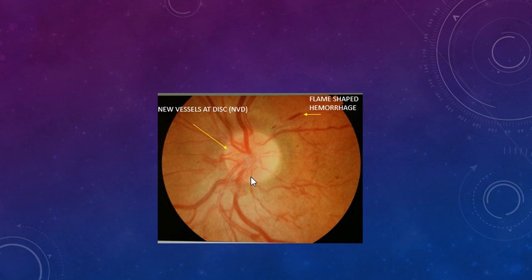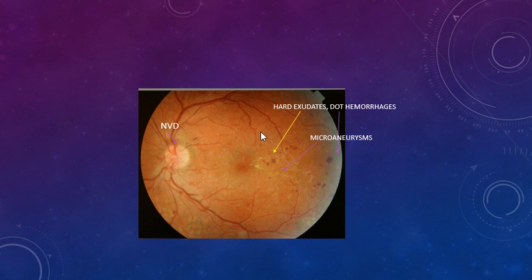Sometimes it may be difficult to pick up new vessels at the disc and differentiate them from collaterals, which can occur in patients with vein occlusions. In such cases, fluorescein angiography is very helpful — it shows significant leakage in the case of new vessels, whereas collaterals do not show much leakage. Another image here shows dot and blot hemorrhages with some exudates in the macular area close to the fovea — this is very close to the central area, so the patient is at risk of losing vision due to maculopathy.